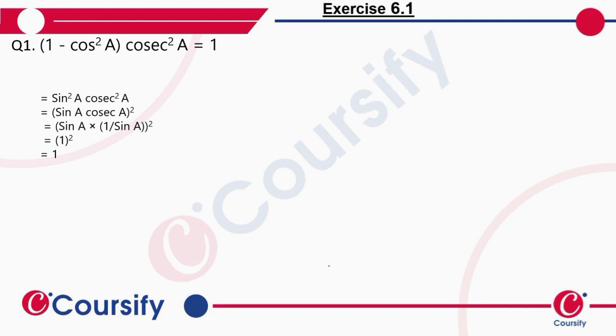1 minus cos square A into cosec square A is equal to 1. So here we have to prove that 1 minus cos square A into cosec square A is equal to 1.